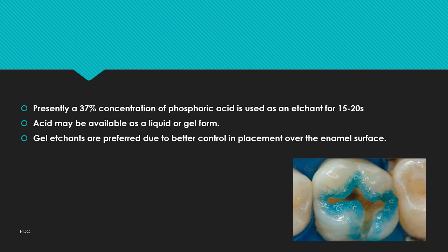For acid etching, currently a 37% concentration of phosphoric acid is used. It is available as a liquid or gel. Gel etching is preferred due to its controlled placement.